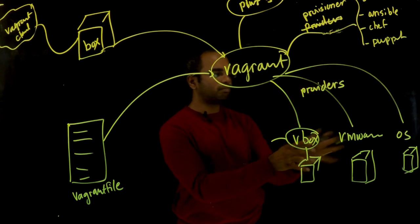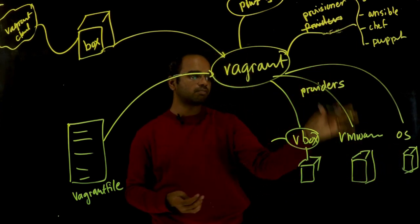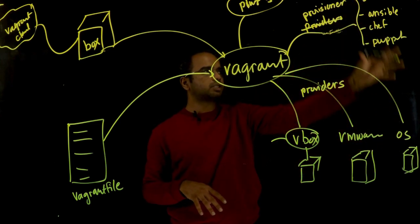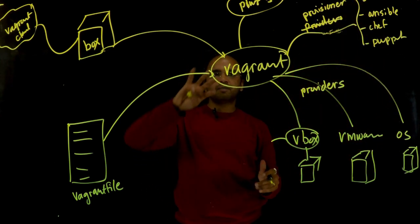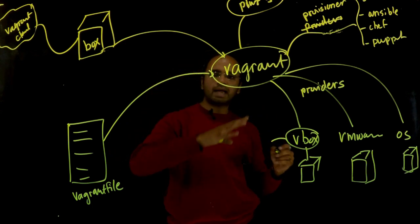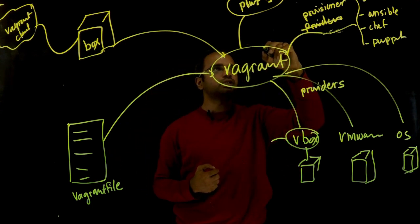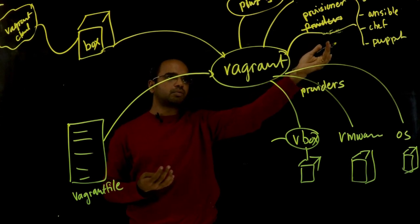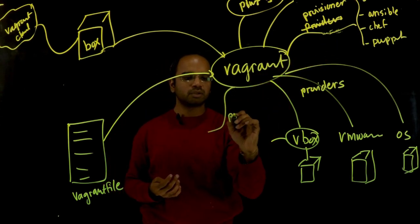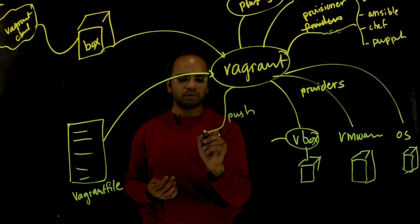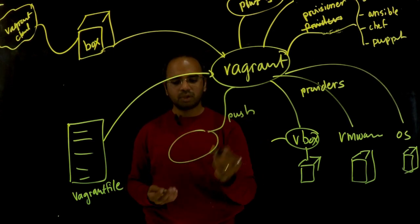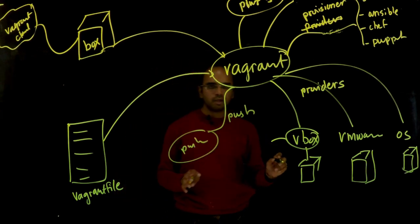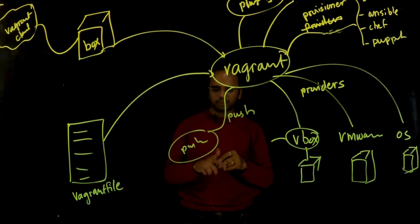The provider can be VirtualBox, and for the provisioner you have a choice. You can also deploy applications, push the application code, do that through the provisioners. But you also have a way to push the code to your systems using the Vagrant push command.